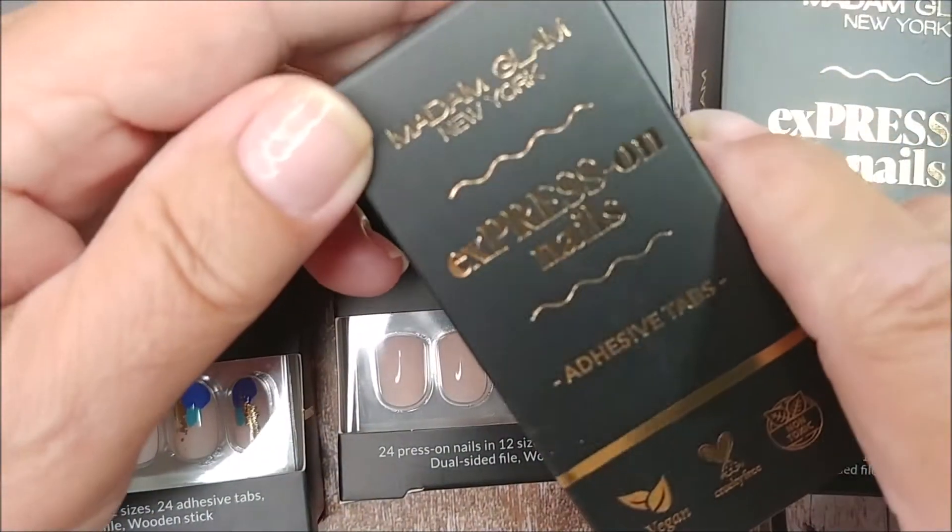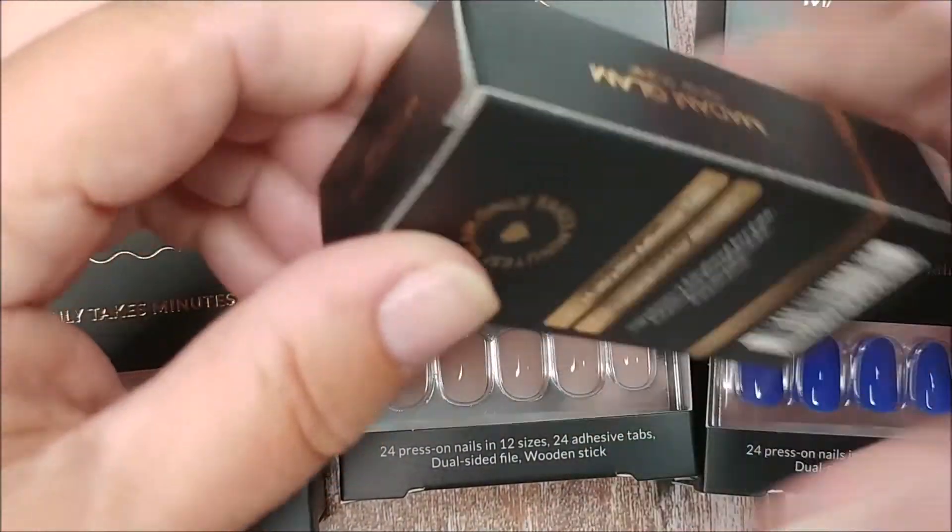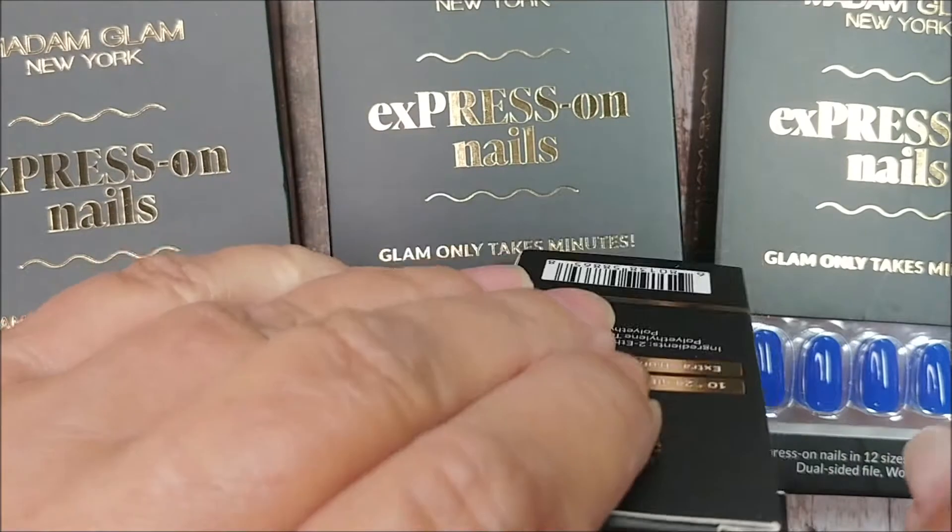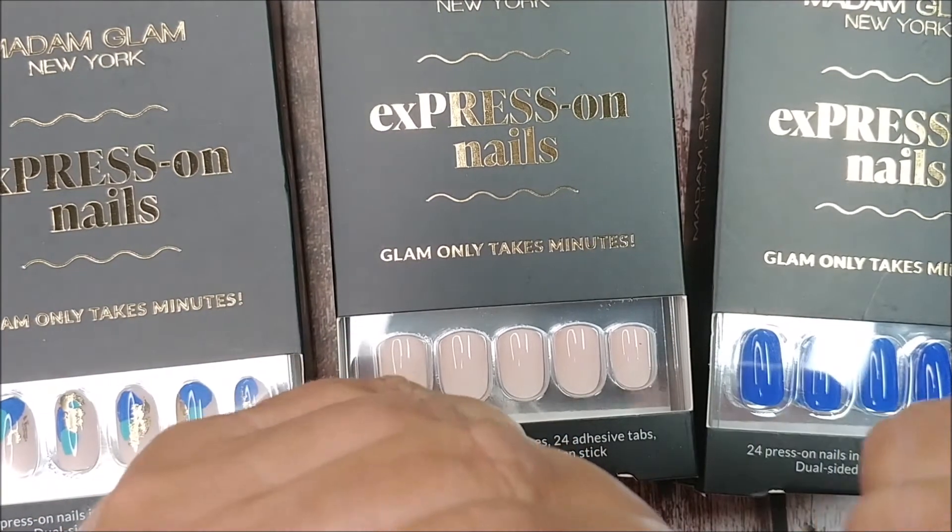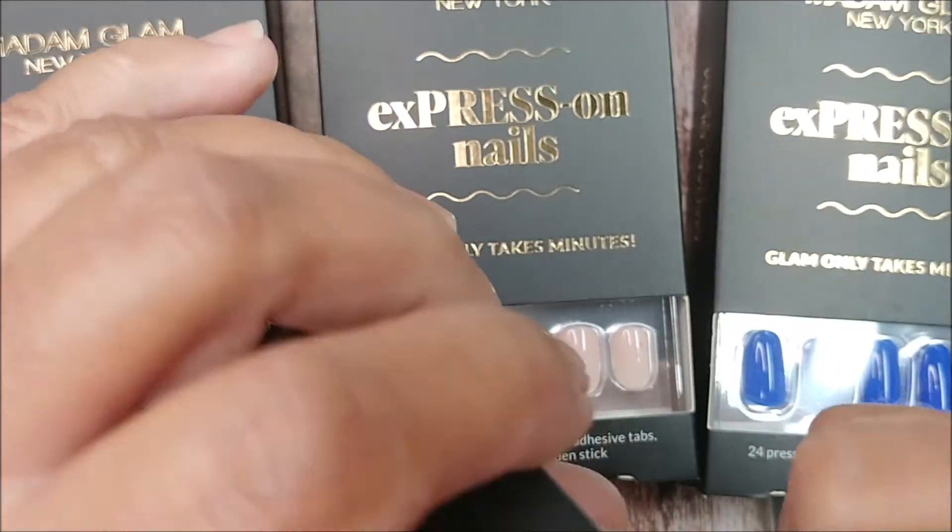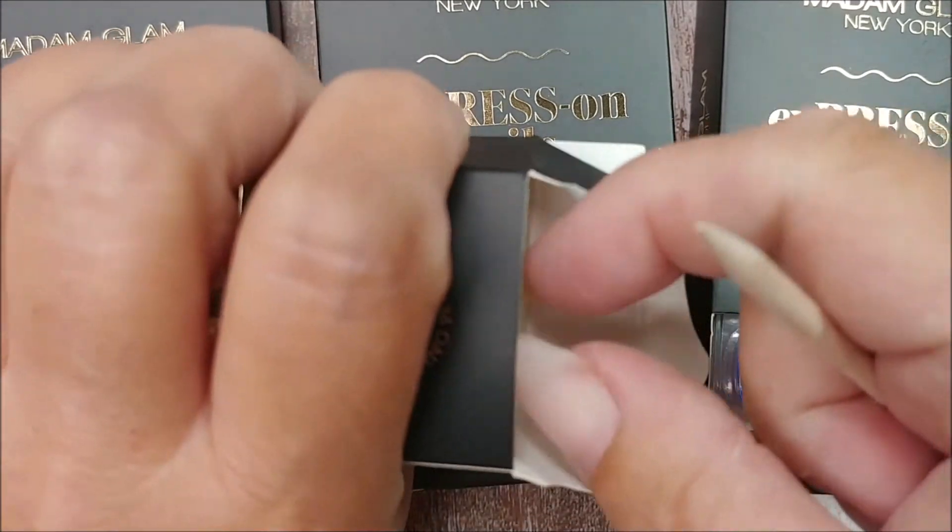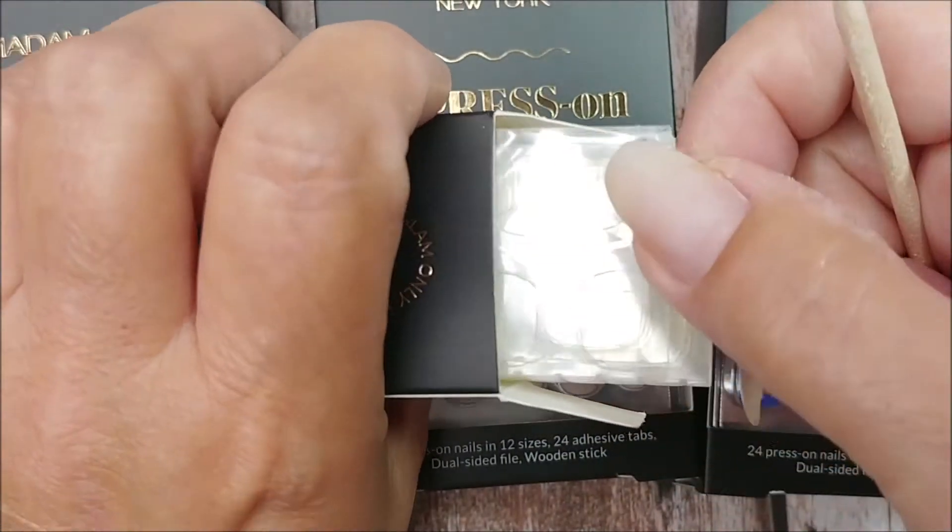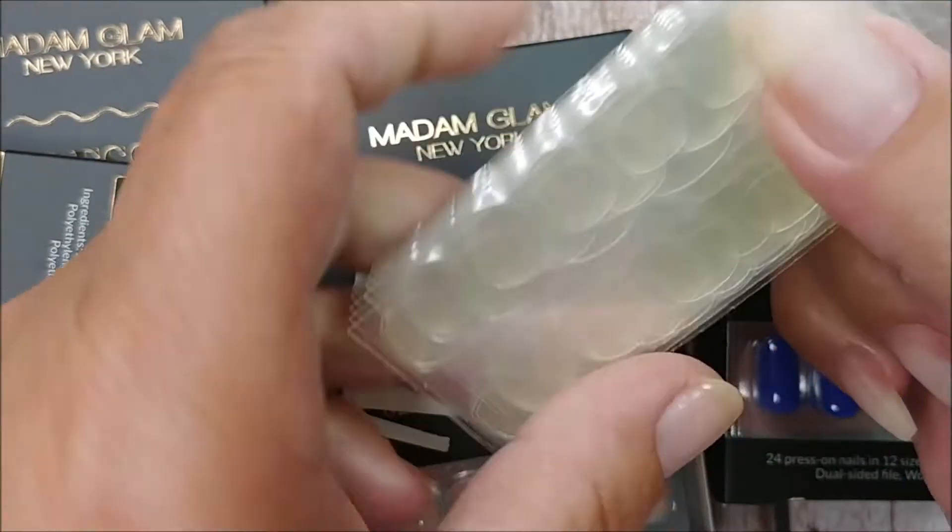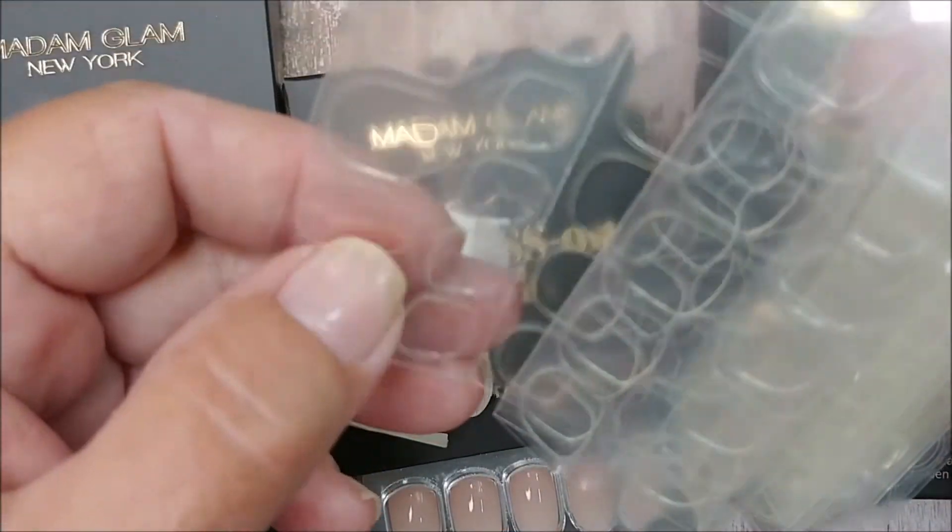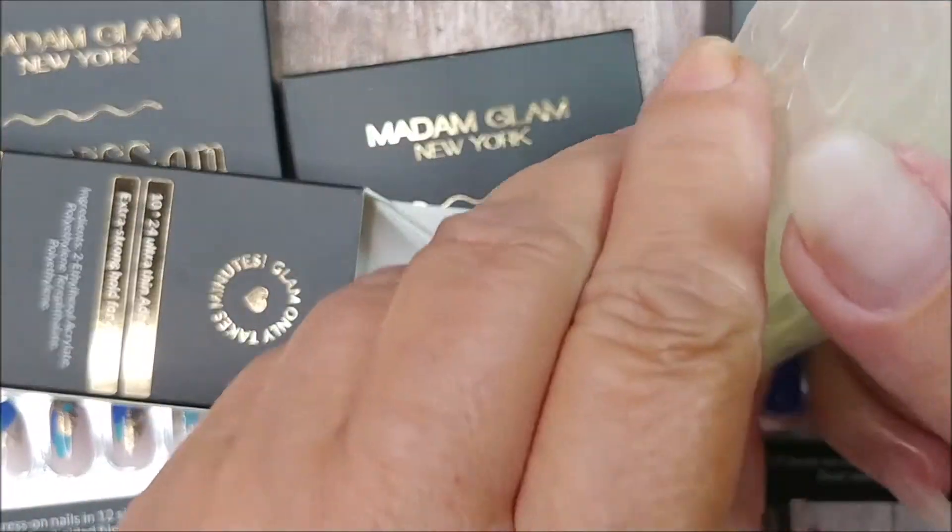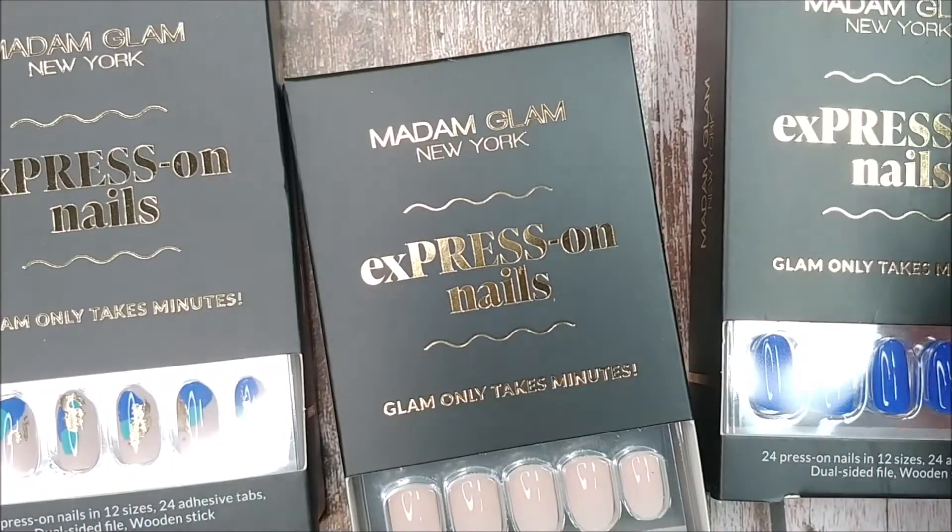And then we got Express on nails adhesive tabs. I think these are just extra tabs. I ripped the box. Yeah, these are extra tabs. Those glue tabs, oh my god, I got the shakes. Yeah, extra tabs. A large one. Okay, let's see.